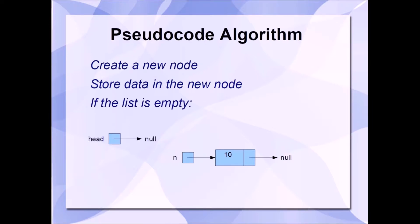If the list is empty, as indicated here by the head node pointing to null, then what we'll need to do is set the head pointer to the memory address of our new node. In other words, we'll set head to N. This will make the new node the first node of the list.